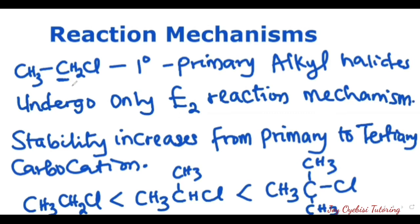For stability of carbocations, it increases from primary to tertiary. When the chlorine is lost, a carbocation forms in its place, and that stability increases from primary to tertiary carbocation.